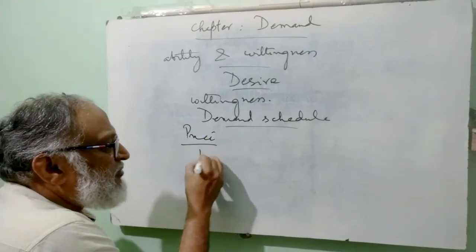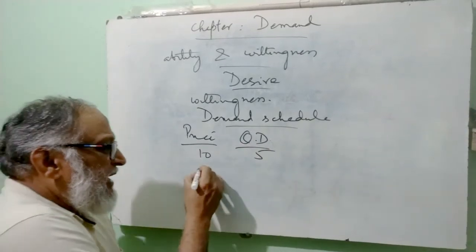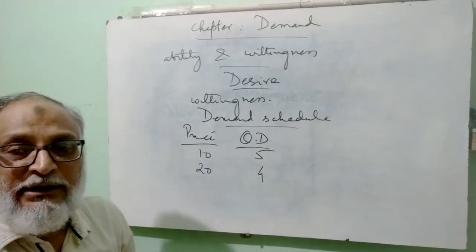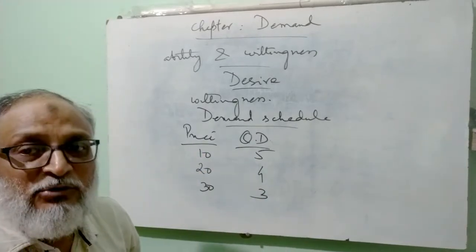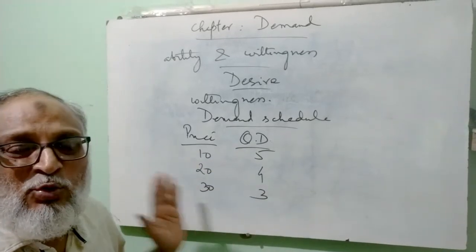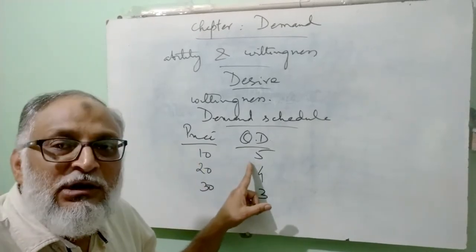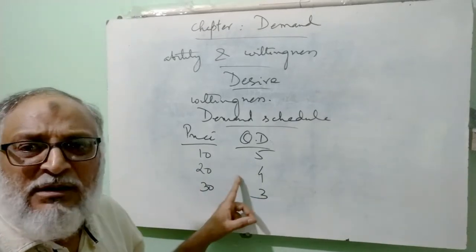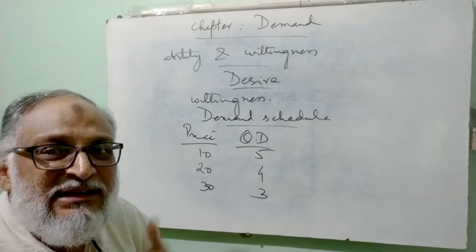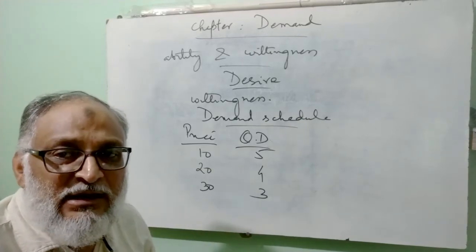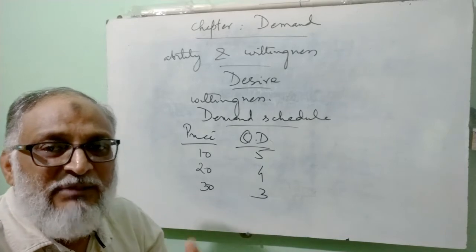For example, I see that the price of a product is 10 rupees. At that time I am ready to take 5 units of it — so that is my demand. Then if the price increases to 20 rupees, my demand falls to 4. And if the price increases to 30, I reduce my demand further to 3. So I have made a table with two columns showing price and demand — at 10 rupees I will take 5 units, at 20 rupees fewer units. This table reflects my demand according to price. Hence it is called demand schedule — a table that shows the relationship or the behavior of demand and price.